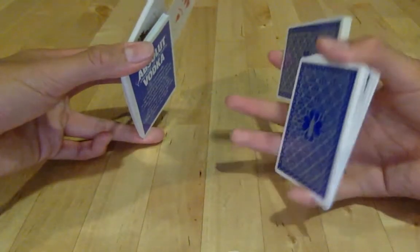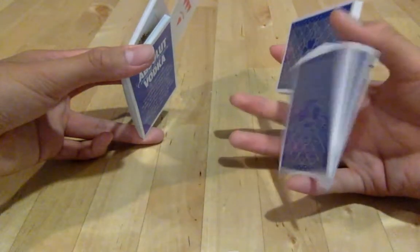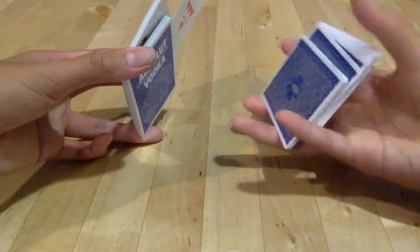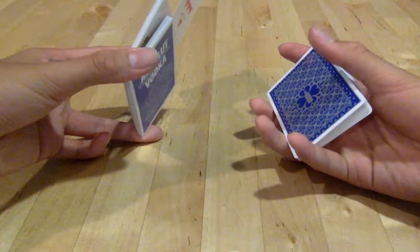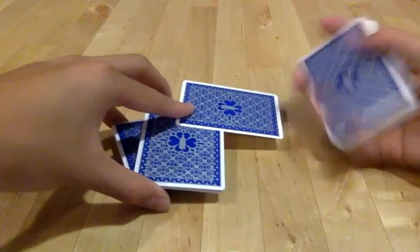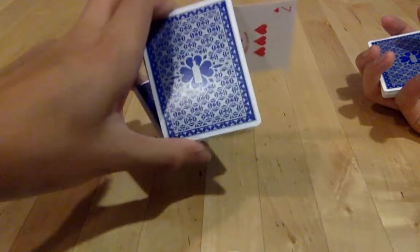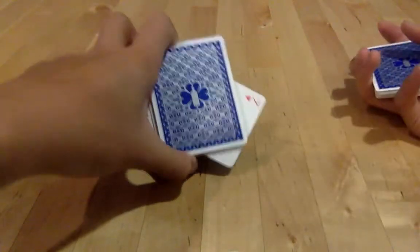With this packet, your thumb is going to let go like this and this packet is going to drop down. Once it drops down, your index finger here is going to slide down like this, leaving this card facing up.